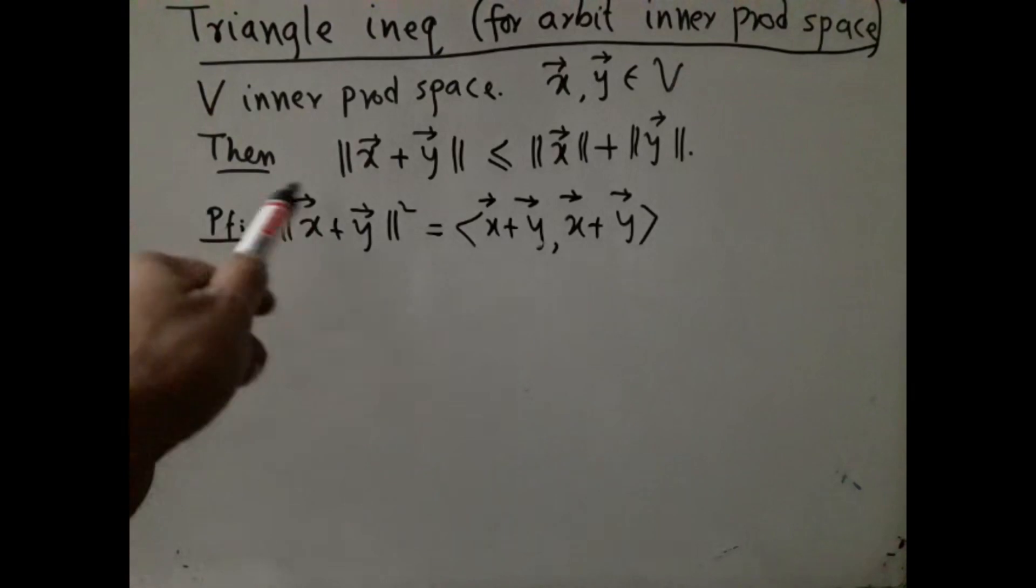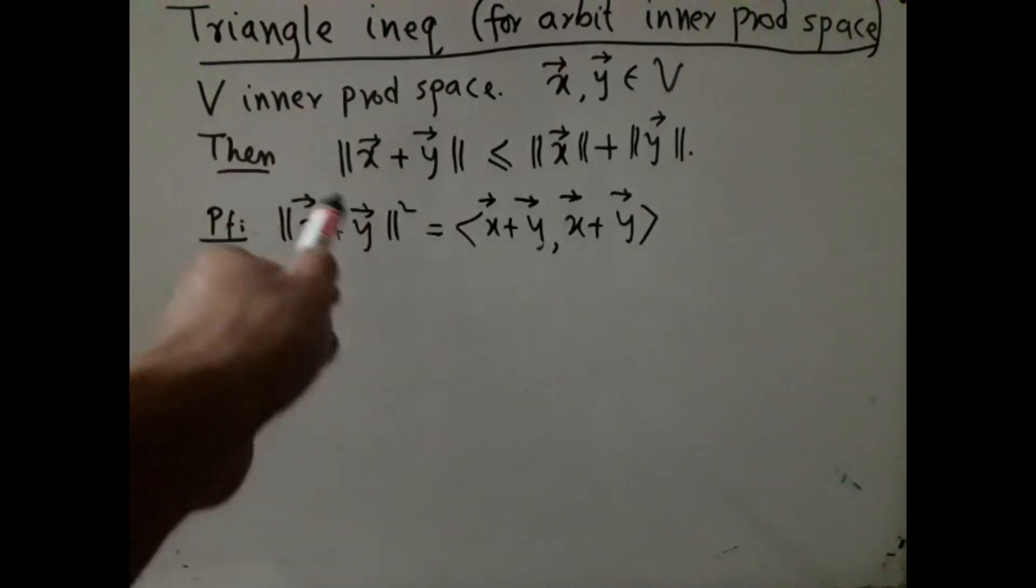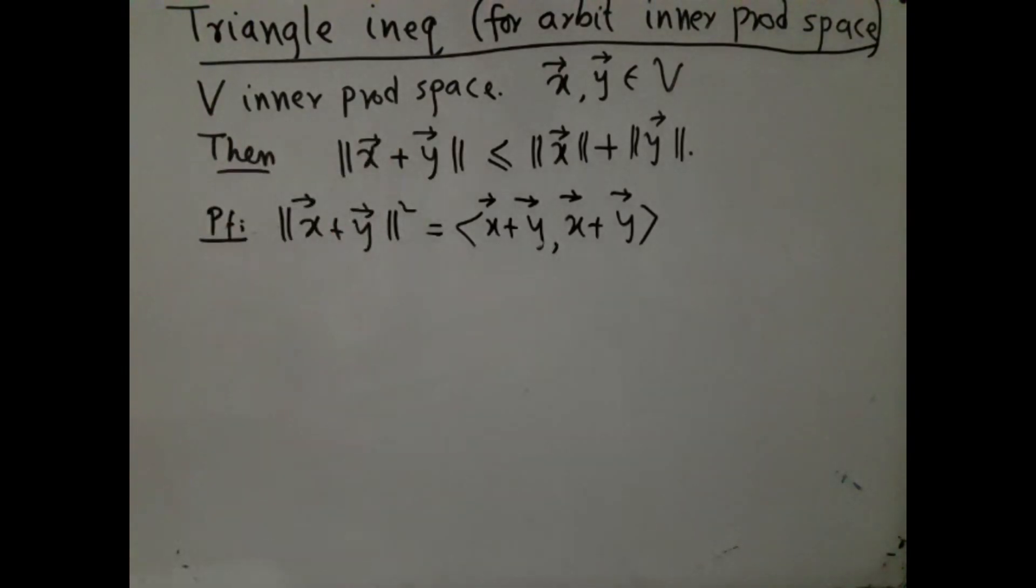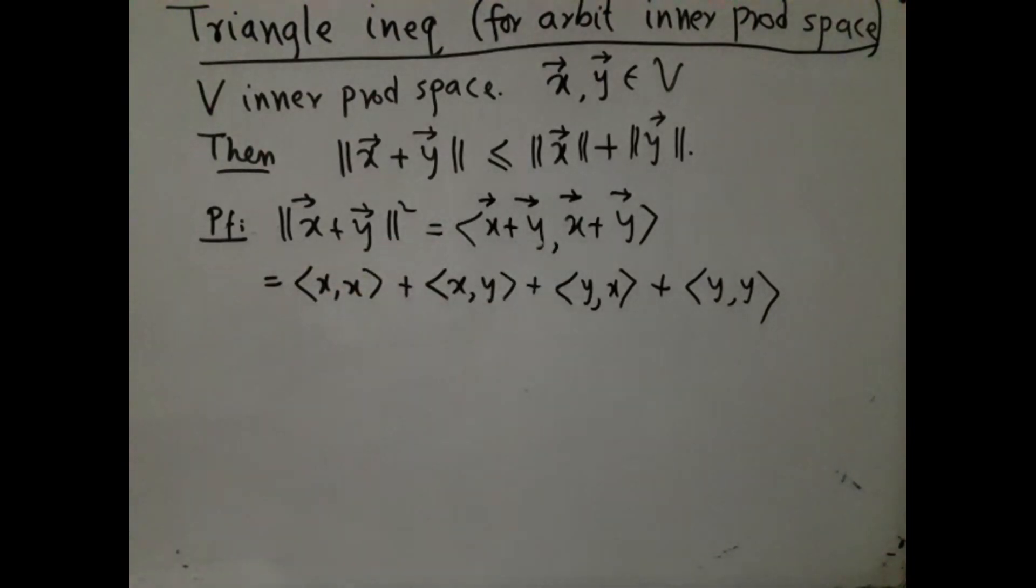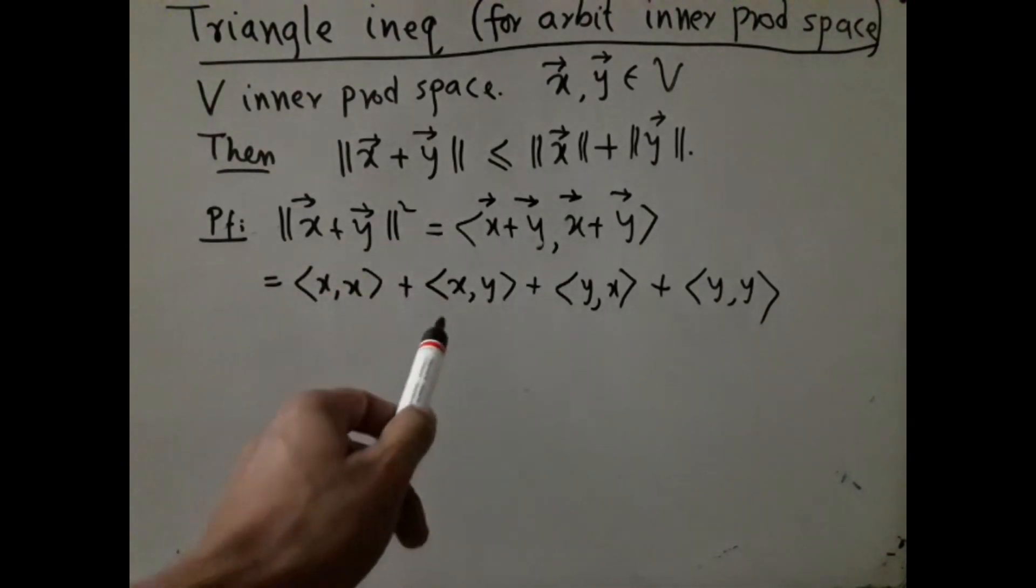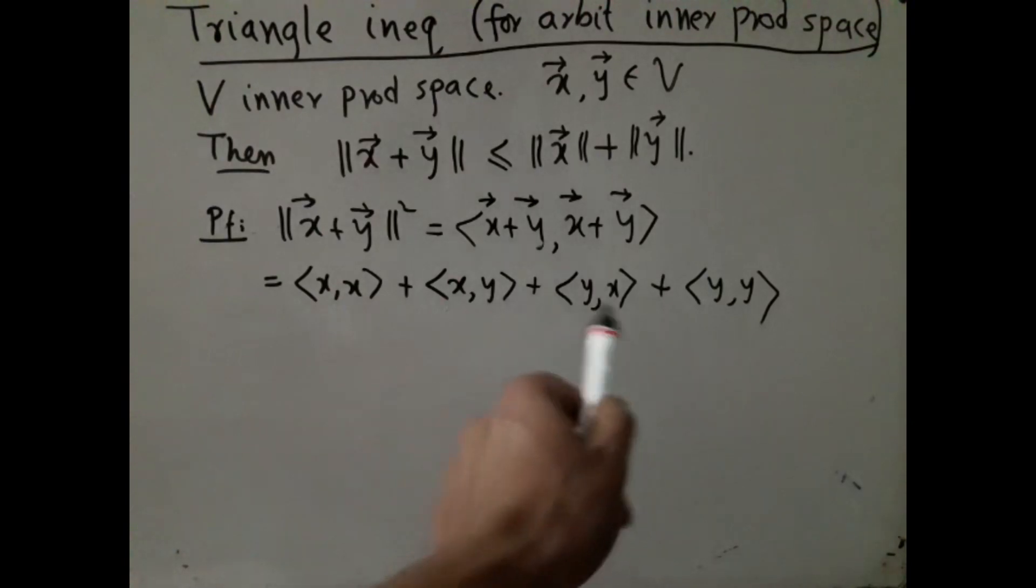The proof is pretty straightforward. We first start with square of the left-hand side and express that in terms of inner product. We know inner product distributes, so we shall employ that to get this. This is very much like the (a + b)^2 formula, except that we do not know whether things commute because the field may be C. As a result, I have kept ⟨x,y⟩ and ⟨y,x⟩ separate.